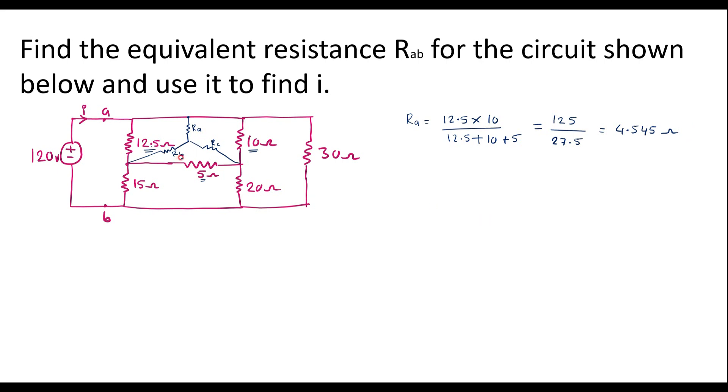Similarly, now I will calculate RB. RB will be equal to product of adjacent resistors. That is 12.5 into 5 divided by 12.5 plus 10 plus 5, which is nothing but 62.5 divided by 27.5, which equals 2.272 ohm.